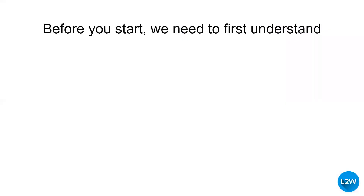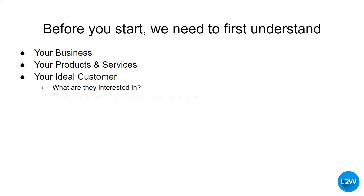Before we start any campaigns on Facebook, there are a number of things we need to understand about your business: what you do, what products and services you sell, and why you're different to someone else in your niche. We also need to understand your ideal customer — what are they interested in, what are their pain points, what keeps them up at night. Knowing this information is important because we can then find people with similar characteristics on Facebook — whether directly through age and interests, or indirectly through related interests — and there are loads of ways to get creative in finding your target audience.